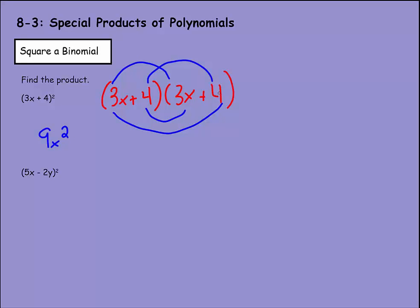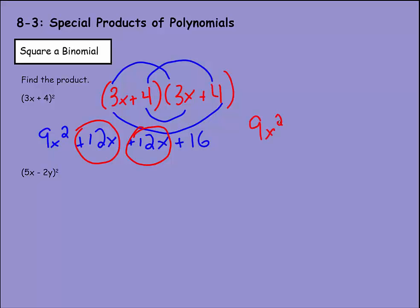Front: 3x times 3x gives 9x squared. Outside: 3x times 4 gives plus 12x. Inside: 4 times 3x gives another plus 12x. Then 4 times 4 is plus 16. After simplification, combining the like terms, I get 9x squared plus 24x plus 16.